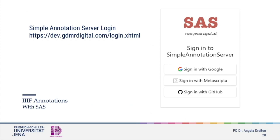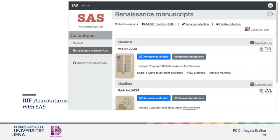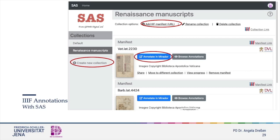Using the simple annotation server is very easy because you don't need to download anything. You just need to sign up to one of the three options. Once logged in, you can create your own collection of IIIF single or multi-page images. My collection here is named Renaissance Manuscripts. Thereafter you go to add IIIF manifest and drop the string of the IIIF manifest URL here. You see that I uploaded a couple of manuscripts from the Vatican Library.